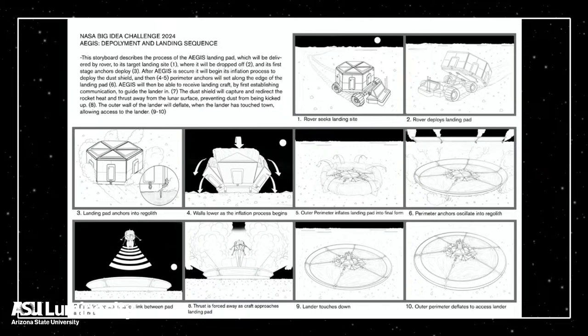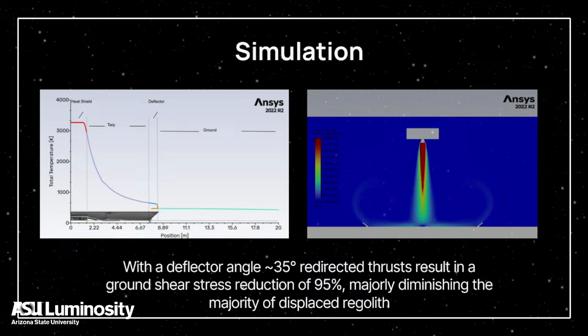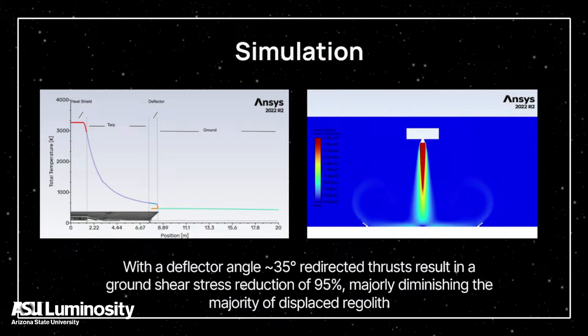After the lander successfully touches down, it deflates some components to drop its deflectors, letting any packages, payloads, or rovers exit the landing site, then redeployment happens for the next incoming lander. Using fluid dynamics simulations, we can see peak temperatures over 3,000 degrees Kelvin and optimize gas flow so exhaust gases are redirected away from the regolith but not back toward the lander to disrupt flight patterns. Based on initial simulations, we can actually reduce regolith disruption by about 95%, a huge benefit that can really reduce landing zones.